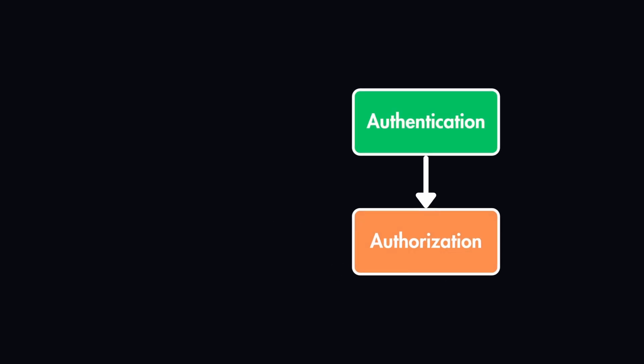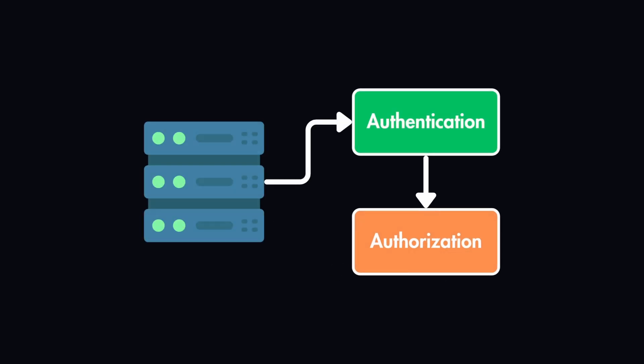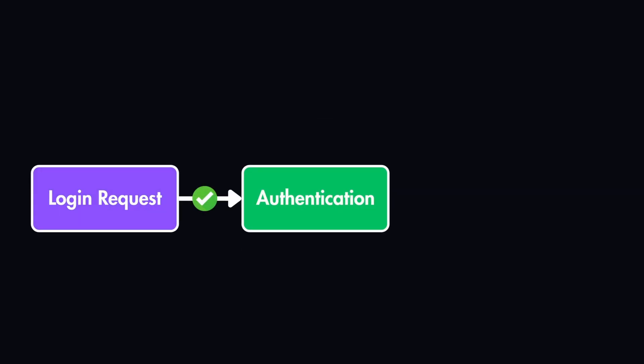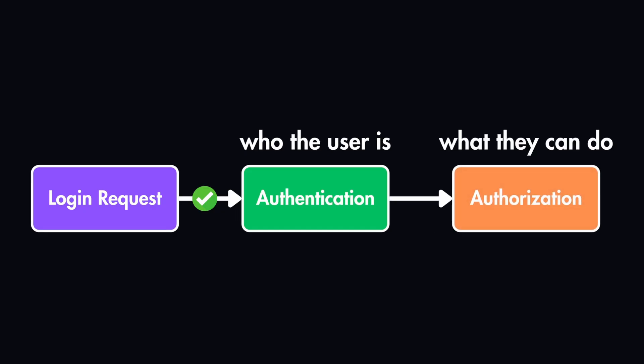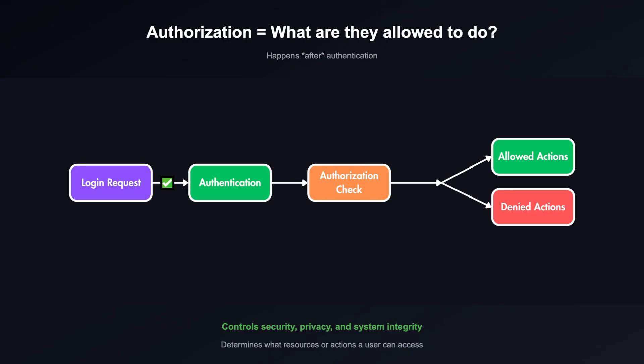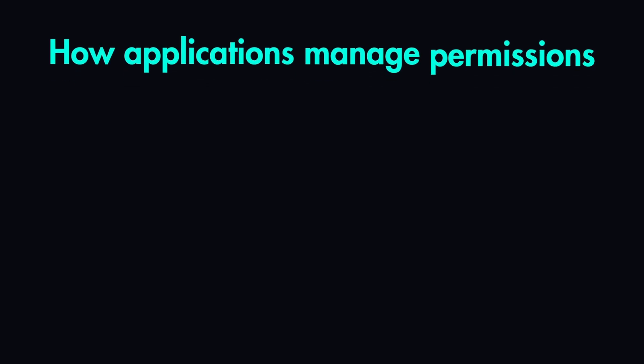Authorization is the step that happens after authentication. Once the login request is approved, which means the system now knows who the user is, the next step is deciding what they can do — that is authorization. It checks what resources or actions a user has permissions to access and what actions are denied. This is how we control security and privacy in systems, and in this video you'll learn how applications manage permissions using the three main authorization models.